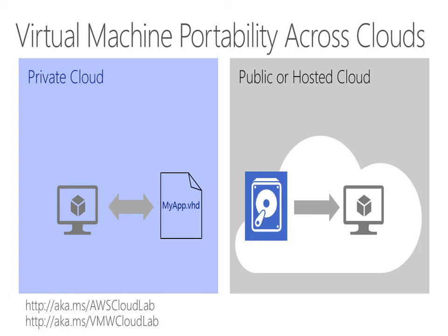If you're using a different virtualization platform, either in your private cloud or public cloud, you may find the links at the bottom of this slide handy. I've got two step-by-step guided labs — one that walks through migrating cloud-based VMs running on Amazon AWS over to Windows Azure, and one that targets VMware VMs running in an existing on-premises data center, migrating them to a virtual hard disk that can then be used in a private cloud environment and moved either to Hyper-V on-premises or to Windows Azure or a hosted cloud provider using Hyper-V.